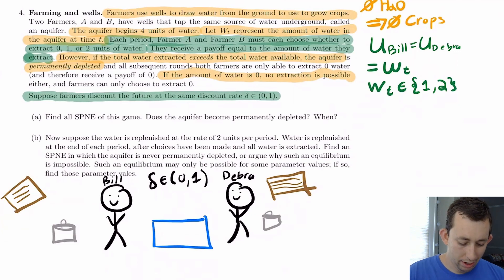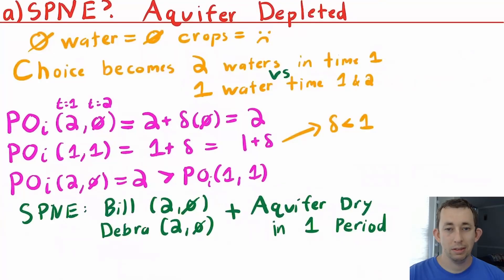So let's just go on to part a, which is to find all the SPNE of this game and whether or not this aquifer becomes permanently depleted and when. And again, unsurprisingly, we think this aquifer is going to get depleted. So notice, once again, zero water means zero crop. So this is really a choice of one versus two waters, which means that really the choice is, do we deplete this aquifer in one round or two rounds, because to be a subgame perfect Nash equilibrium it must be the case that we're best responding to each other.